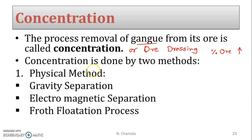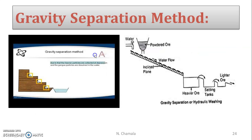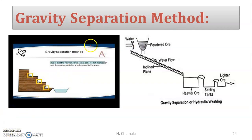Concentration is done by two methods. The first is the physical method, which involves three steps: gravity separation, electromagnetic separation, and the froth flotation process. We will now start with the first physical concentration method — gravity separation.